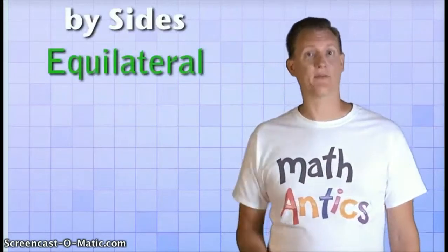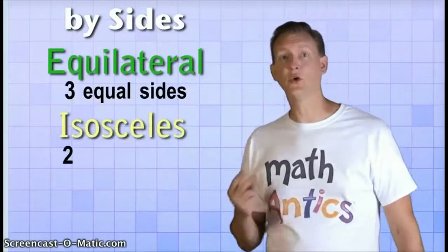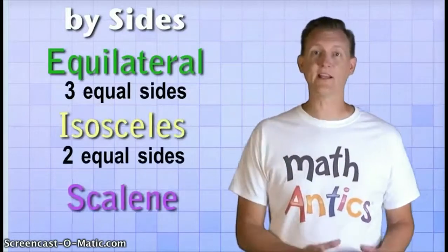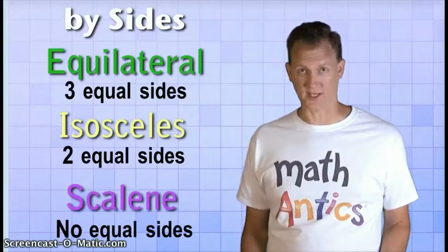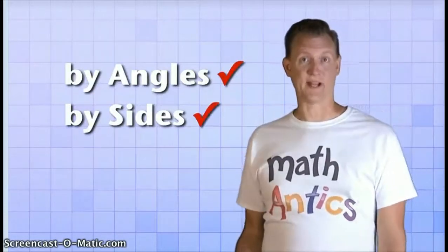So those are the three possibilities when classifying triangles by their sides. Equilateral triangles have three equal sides. Isosceles triangles have only two equal sides, and scalene triangles have no equal sides. That way was pretty easy too. The hardest part is just remembering the names.